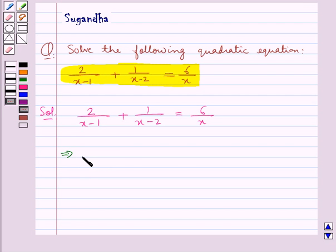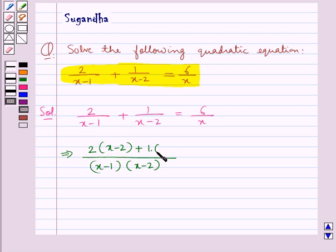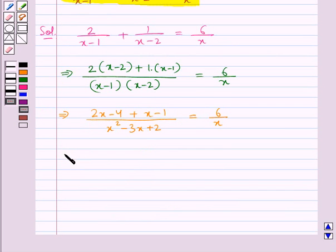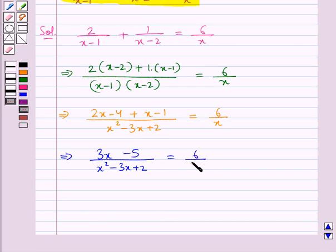On the left hand side we would take the LCM, and in the denominator we would have (x minus 1) into (x minus 2). In the numerator, 2 into (x minus 2) plus 1 into (x minus 1). This gives us 2x minus 4 plus x minus 1, upon x squared minus 3x plus 2, equal to 6 upon x. Further, we get 3x minus 5 upon x squared minus 3x plus 2 is equal to 6 upon x.